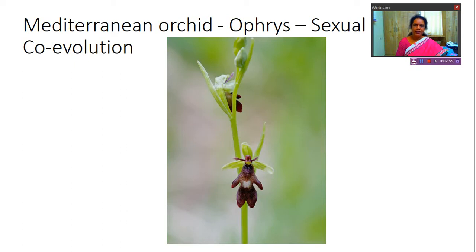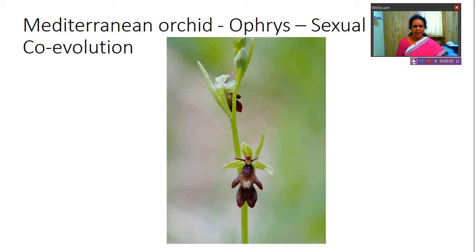This type of relationship results in co-evolution. We can see such mutualism in lichens, where there is an association between fungus and algae, and also in mycorrhiza. Another example is Rhizobium bacteria and leguminous plants — both are benefited. So such type of relationship, where both organisms in the relationship are getting benefit from each other, is called mutualism.